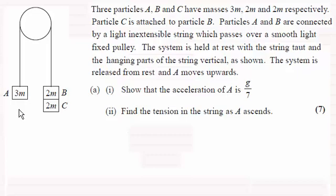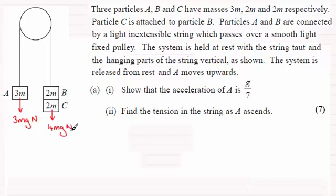So for A we've got the weight, which clearly acts downward, and that weight will be 3mg Newtons. And we've got the weight of these two particles which combined is going to be 4mg, and that acts downwards. Then we've got the tensions in the two strings — they're going to act upwards, irrespective of which way the particles move.